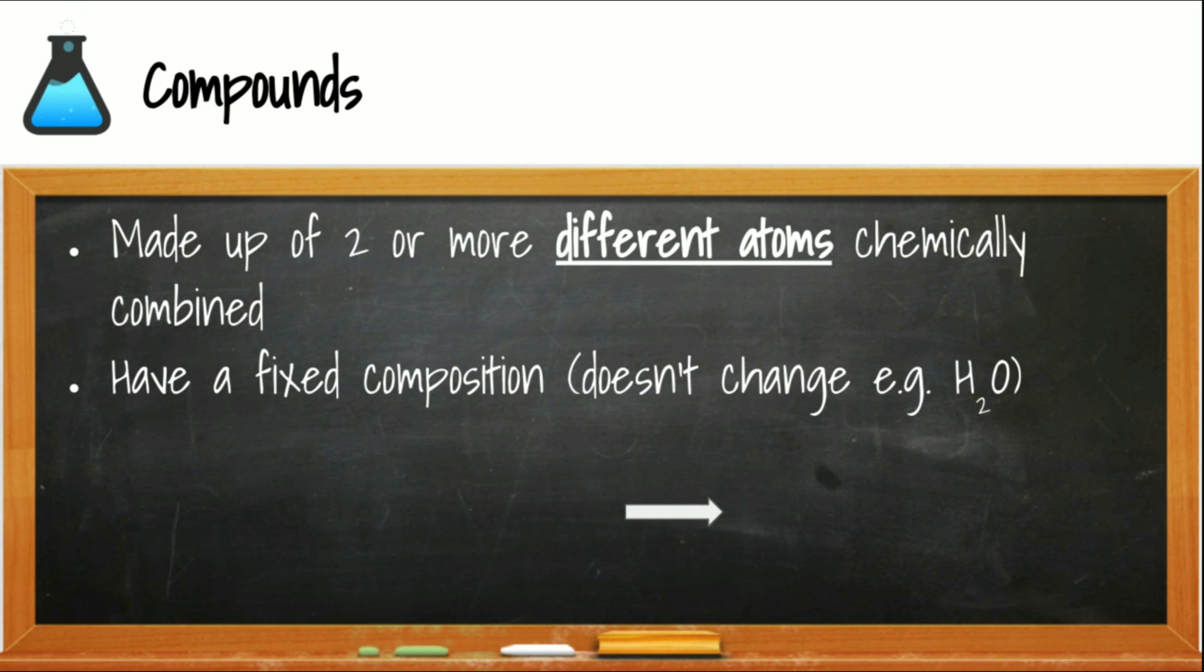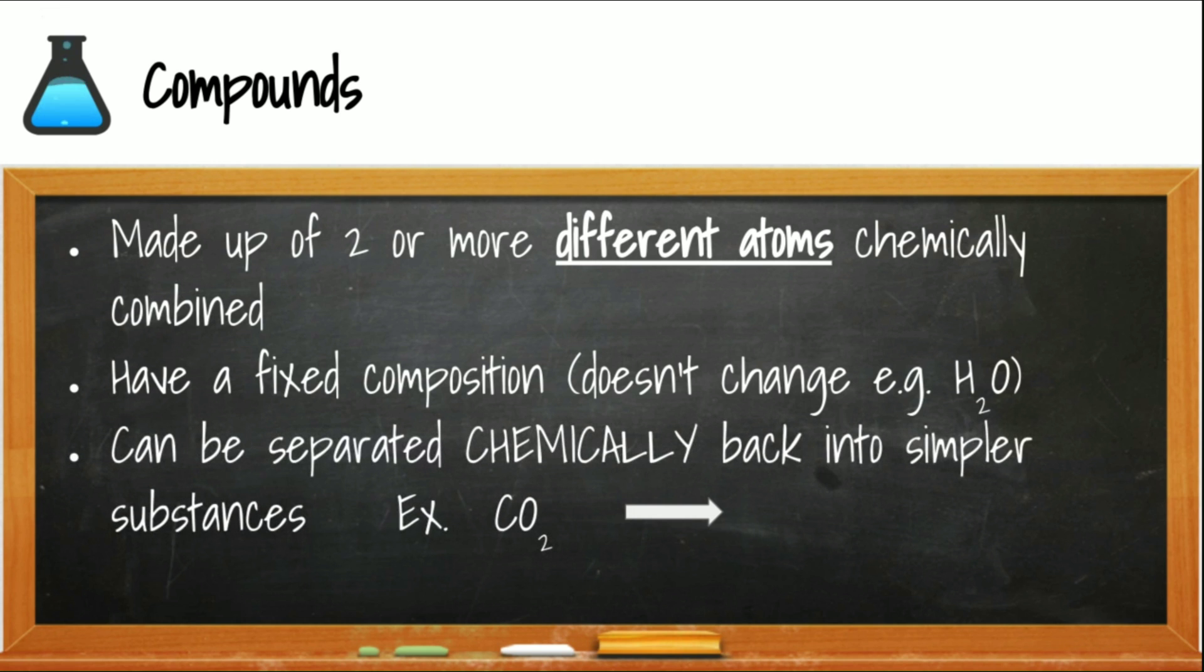In compounds, the two different atoms are going to be chemically combined or bonded. They have a fixed composition. For instance, water is always H2O, and if you had a different composition, like H2O2, you would have hydrogen peroxide. If you change the proportion, you also change the compound. Compounds can be separated by breaking bonds. This requires a chemical reaction to separate them. For instance, carbon dioxide, we can use a chemical reaction to separate it into carbon and oxygen.